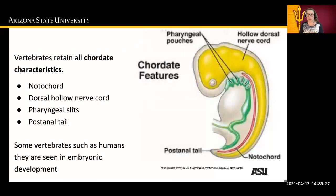Some chordate features are seen in vertebrates only in embryonic development. So in humans and many other animals, we see the notochord, the dorsal hollow nerve cord, the gill slits, and the post-anal tail only in embryonic development — not in adulthood or even oftentimes after birth.